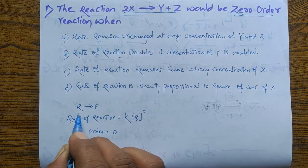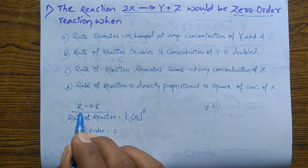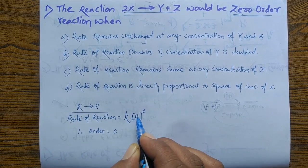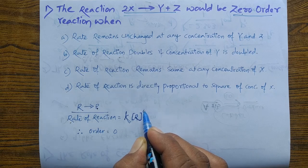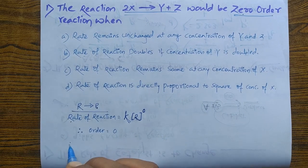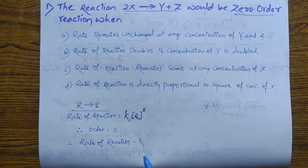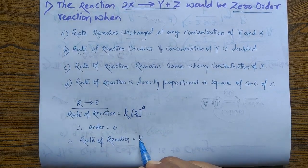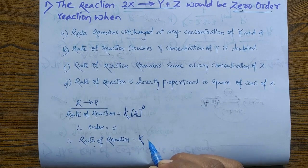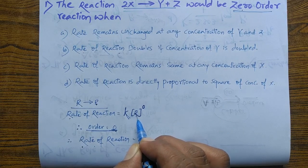Let us consider the general reaction: reactant converts into product. For this reaction, rate of reaction is written as rate = K × [reactant]⁰, since it is a zero order reaction we write the power of reactant concentration as zero. Therefore rate of reaction equals the rate constant K, since anything raised to zero is always one. There is no concentration term. The rate of a zero order reaction does not depend on the concentration of any reactant or any product.